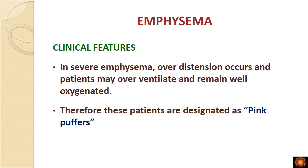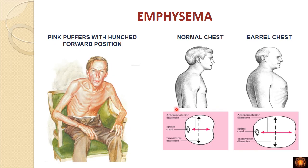These patients typically sit in a hunched-forward position and breathe through pursed lips. Because the air spaces are dilated, patients are over-ventilated and remain well-oxygenated, which is sometimes called a 'myth of over-oxygenation' — hence the term 'pink puffers.' Blue bloaters are patients with chronic bronchitis; pink puffers are patients with emphysema. Barrel chest means an increase in the anteroposterior diameter while the transverse diameter remains the same.